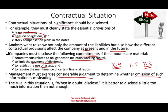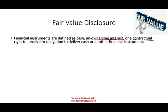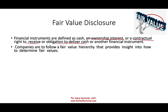Fair value disclosure is a very important concept because we are moving more and more toward fair value, reporting assets and liabilities at fair value — mostly financial instruments right now, such as cash, ownership interests, contractual rights to receive or deliver cash, options, puts, calls, and derivatives. Companies are to follow the fair value hierarchy, which provides insight into how to determine fair value. There are three levels: Level 1 is the best and most reliable, based on observable inputs such as market prices for identical assets or liabilities — for example, publicly traded stocks in Apple, AT&T, or Amazon.